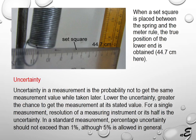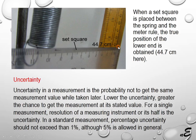To avoid parallax error, we can use a set square. With this 90-degree set square, one side is placed parallel to the meter rule and the other side is perpendicular to it. The square just touches the lower end of the object, and here the reading is 44.7 centimeter. This is the most accurate reading.